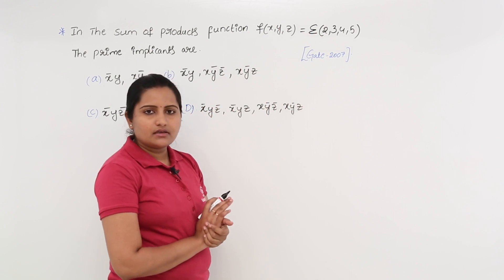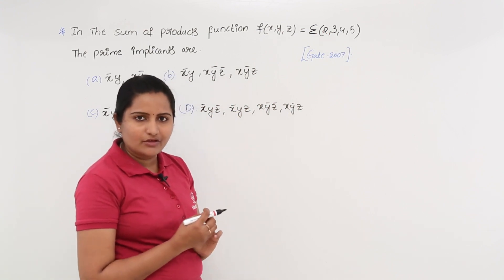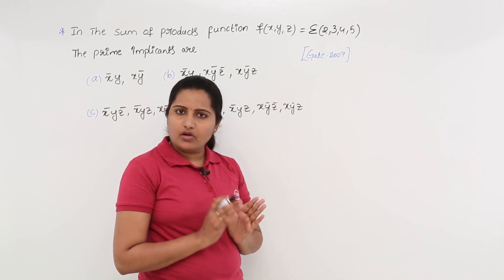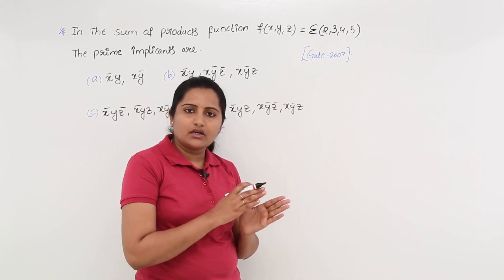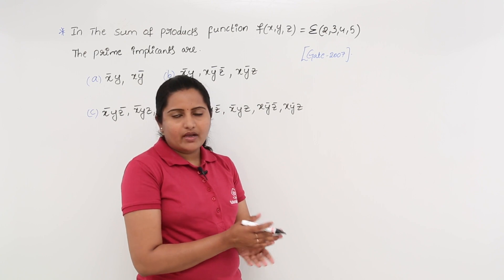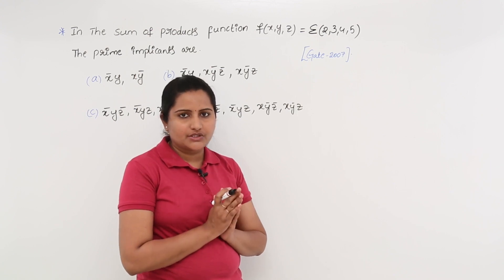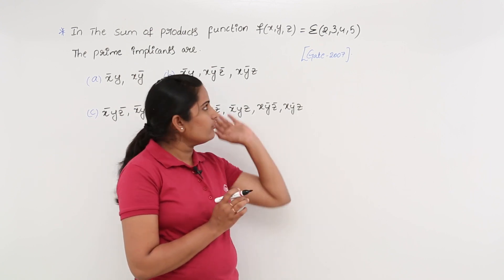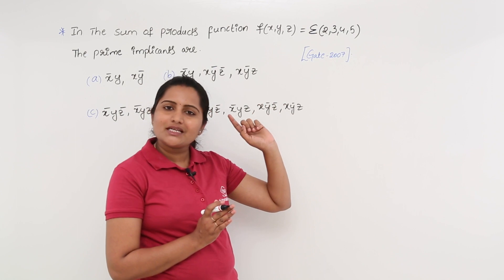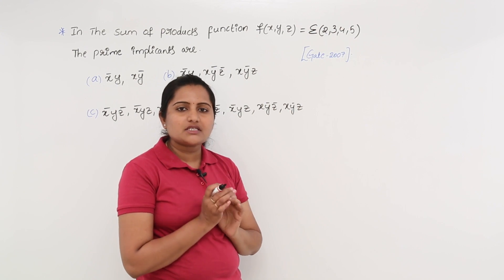Now you need to observe these minterms. They are given as 2, 3, 4, 5. The maximum value of minterm here is 5, meaning it is not greater than 7. For example, if you are having 2 variables you may have 2² minterms, meaning only 0 to 3. But here you are having 4 and 5, so definitely you need to consider 3 variables.